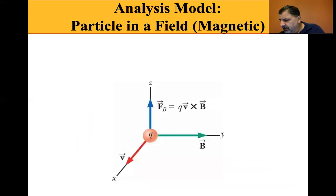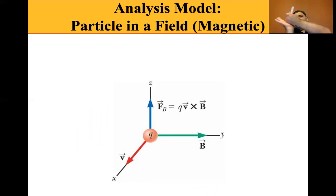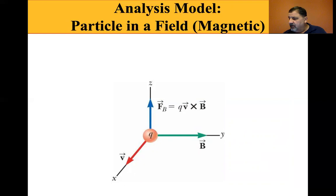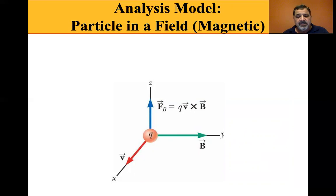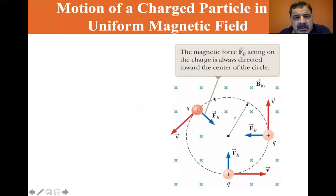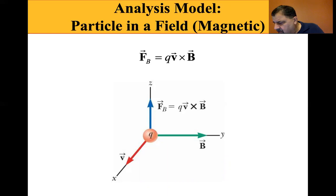Some examples of V cross B: an ion moves in a circular path in a magnetic field in a mass spectrometer; a coil in a motor rotates in response to the magnetic field; a magnetic field is used to separate particles emitted by radioactive sources; and in a bubble chamber, particles created in collisions follow curved paths in magnetic fields, allowing the particles to be identified. In the solar wind there are also charged particles — I thought it was going to show Aurora, but that may be later.